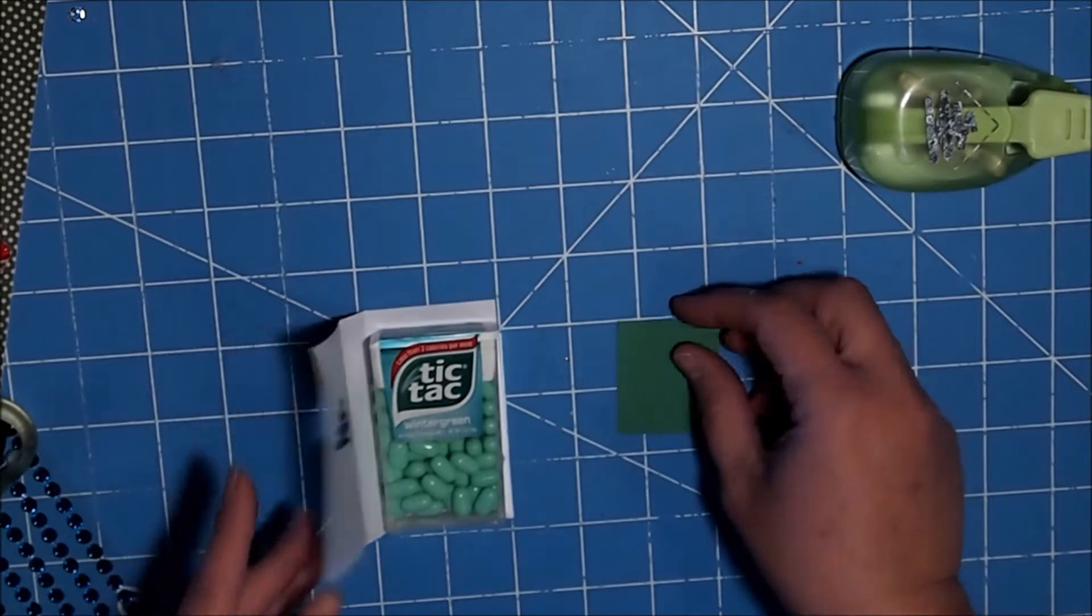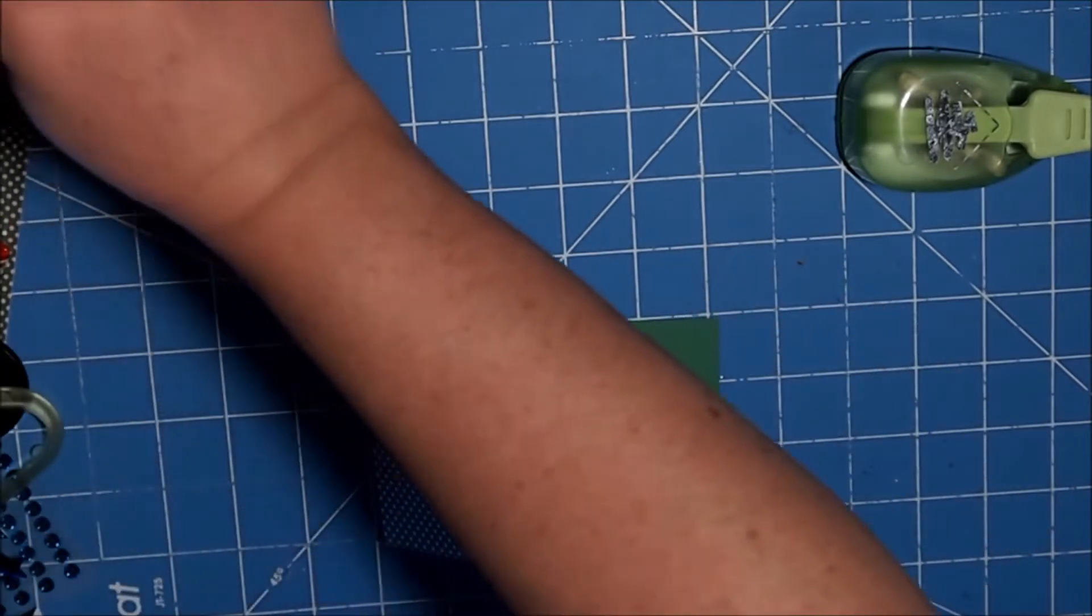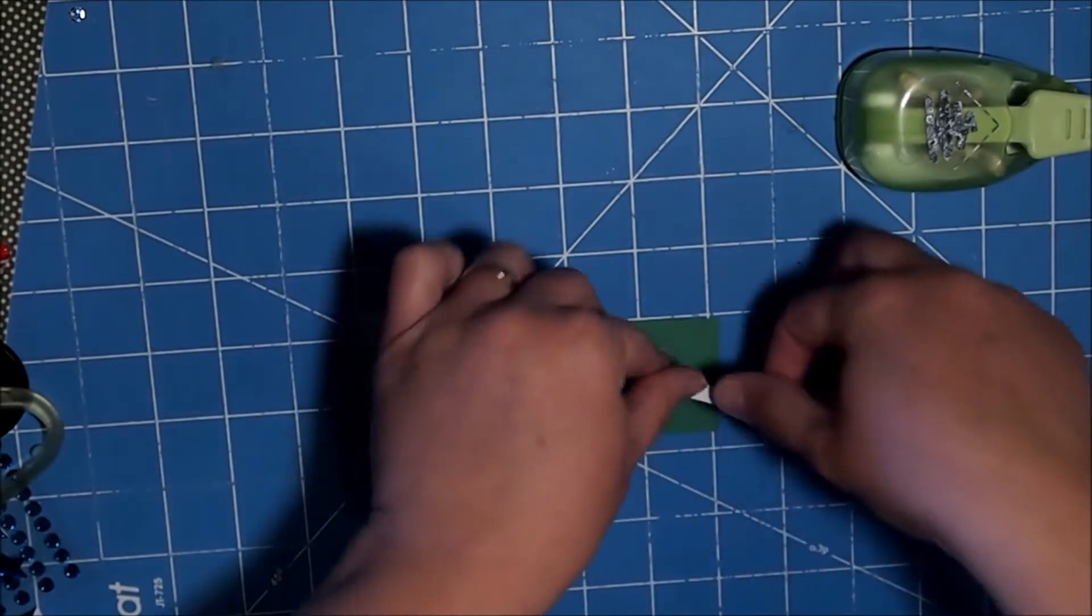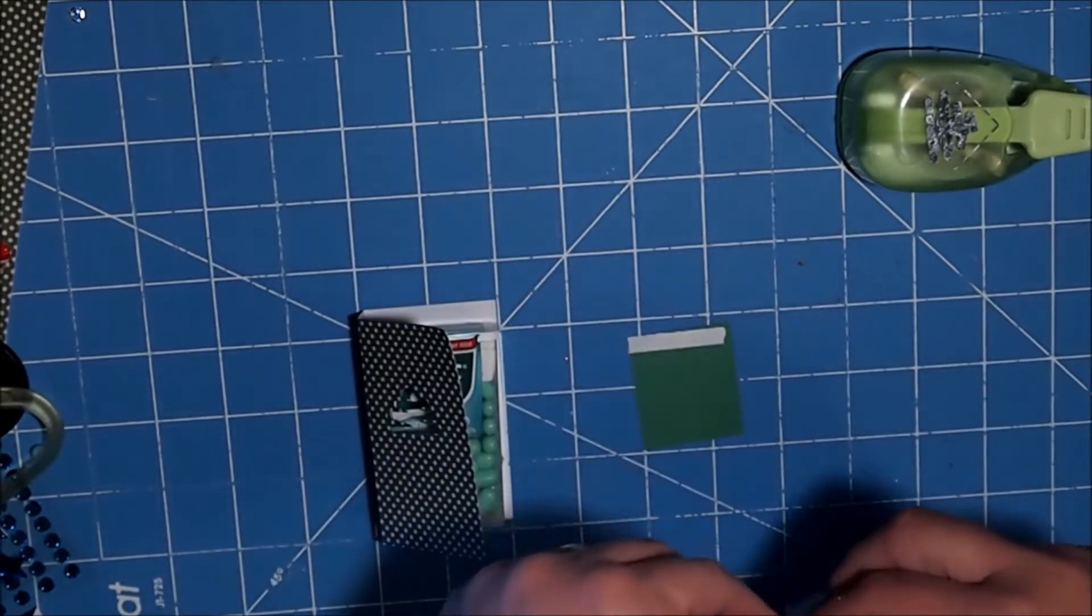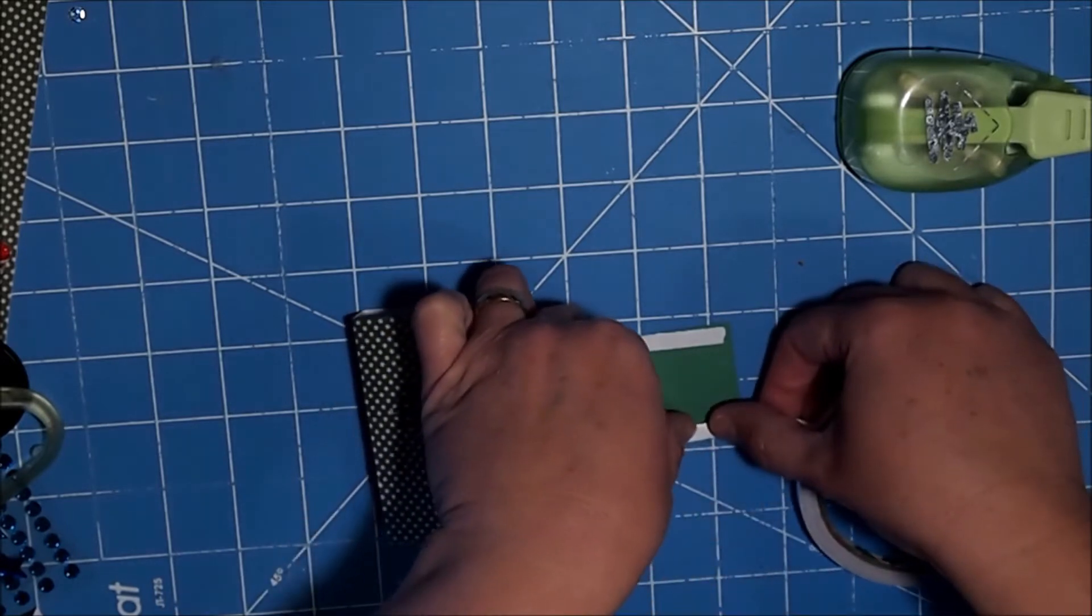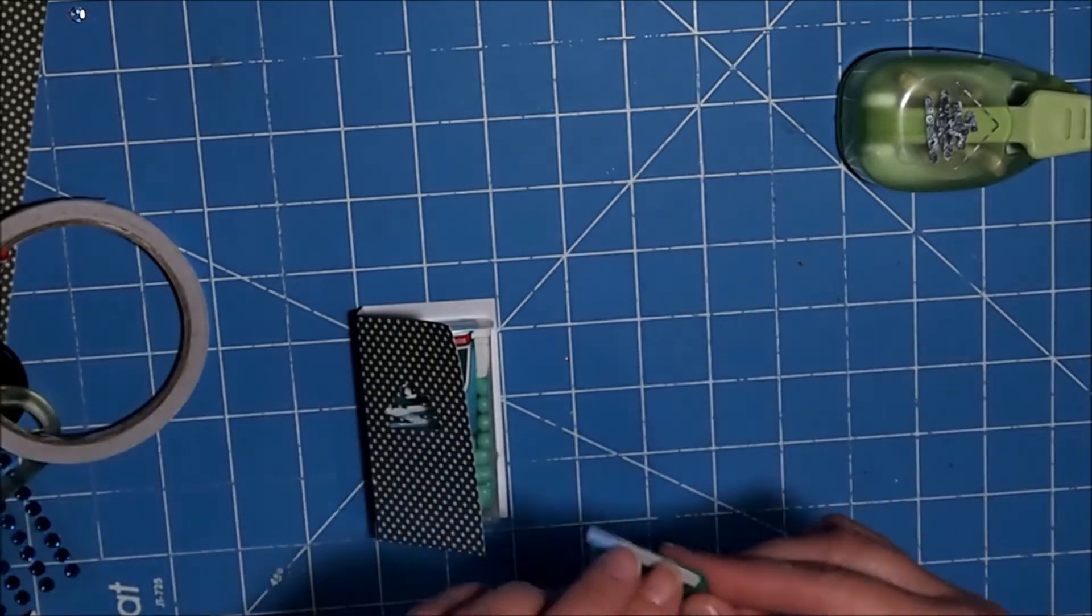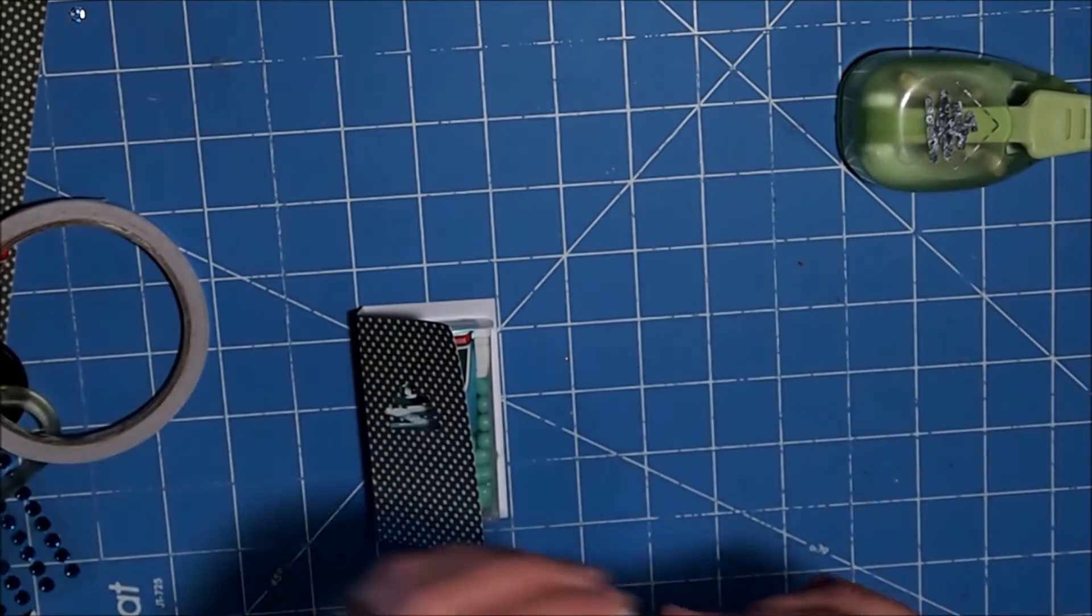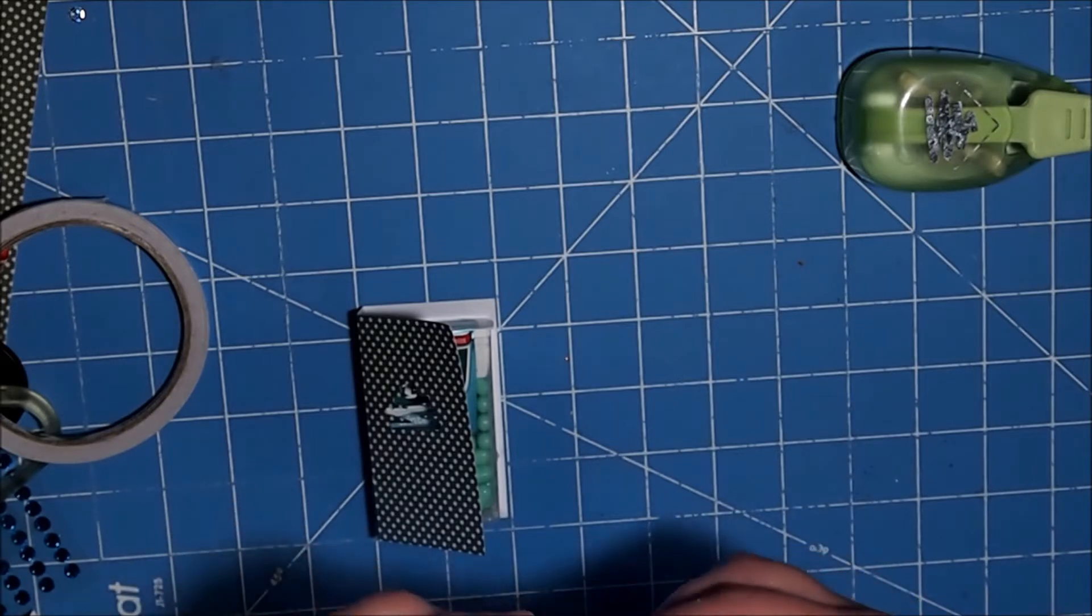And I'm going to attach that using double stick tape. Now if you have any punch you want to, if you just have a circle, then use a circle and turn it into an ornament, you know, or anything like that.